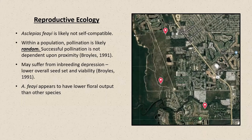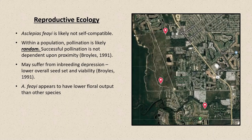Most milkweeds are not self-compatible. That adaptation — where the pollinium has to rotate into position before being reinserted — decreases the chance of self-pollination. Milkweeds basically suffer from inbreeding depression: if they try to self-pollinate, the seed pod will abort. A parent-sibling cross or sibling-sibling cross results in lower overall seed set. If a species can make up to 150 seeds, you might see half that or less from related crosses.